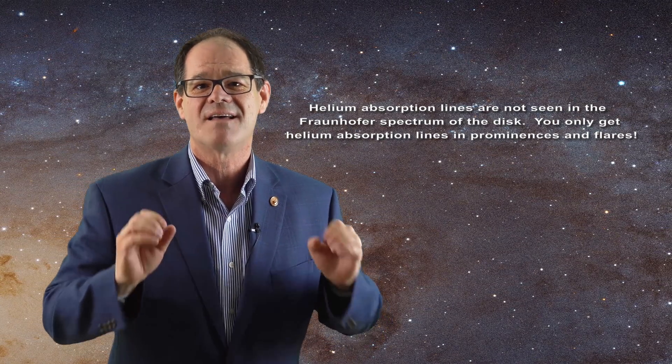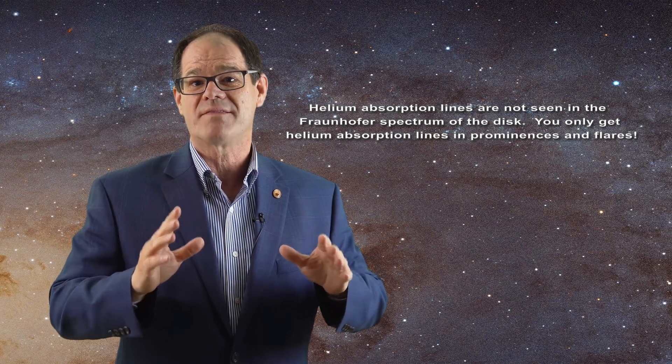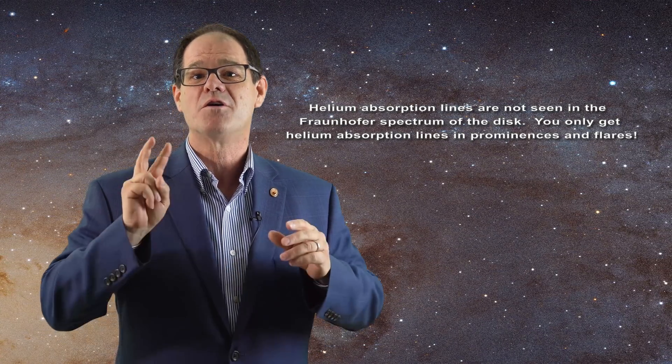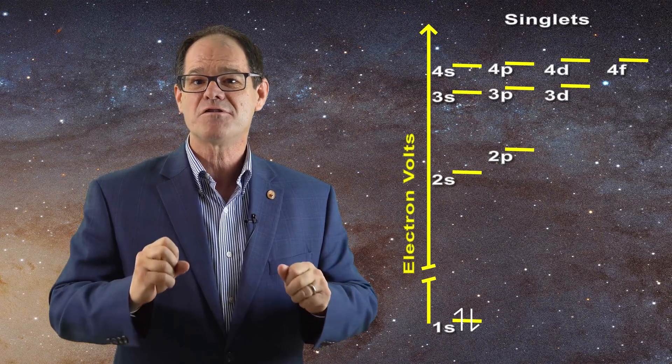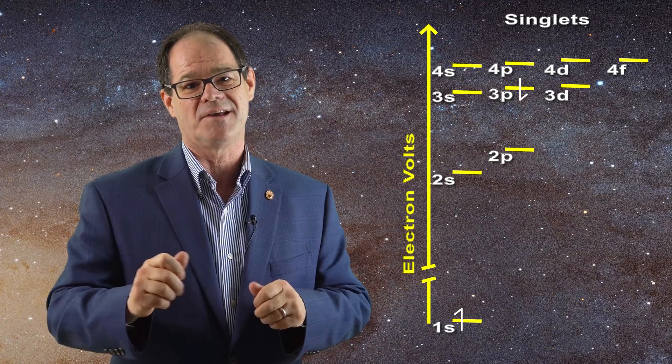It also attempts to hide the fact that helium absorption lines are not seen in the sun. This is a serious problem and it is why the standard model has to invoke two steps to account for the helium emission lines: first ionization then recombination.